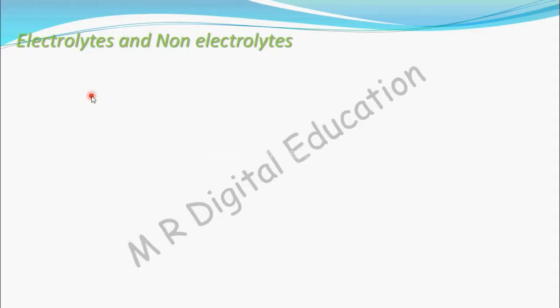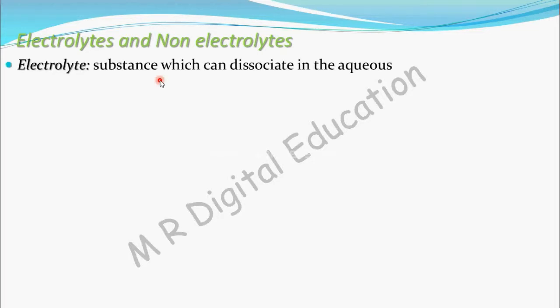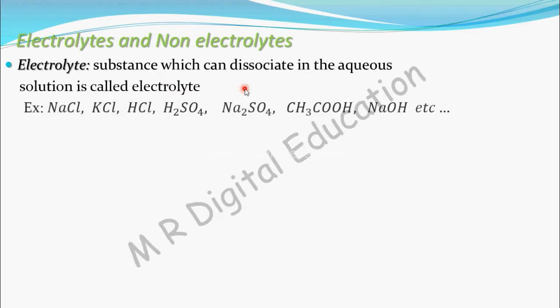Electrolytes and non-electrolytes — let's see what these are. An electrolyte is the substance which can dissociate in the aqueous solution. Examples include NaCl, KCl, HCl, and H2SO4. All these are examples. Let's look at the actual meaning of 'a substance which can dissociate in the aqueous solution.'